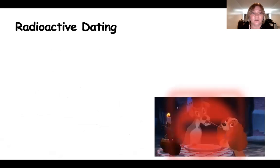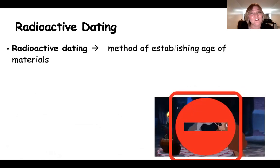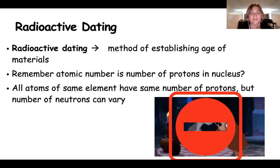We use a process called radioactive dating. These are methods of establishing the age of materials. If you remember that atomic number is the number of protons in the nucleus, all atoms of the same element have the same number of protons, but we do have isotopes, which have a number of neutrons that can vary.